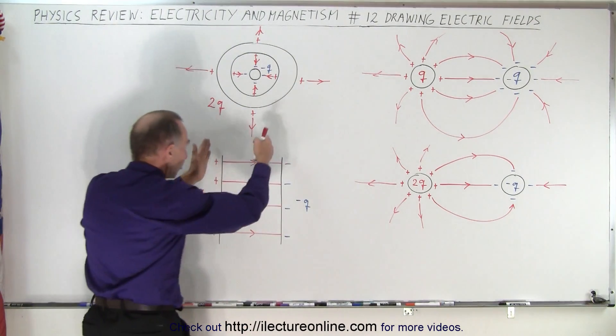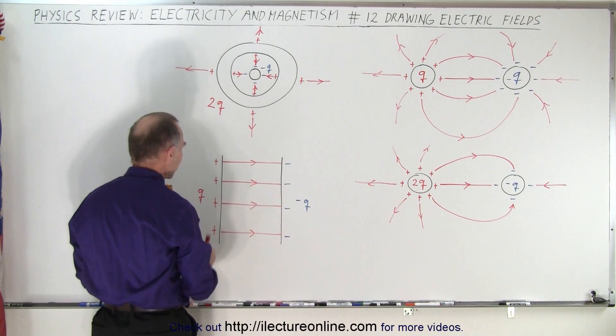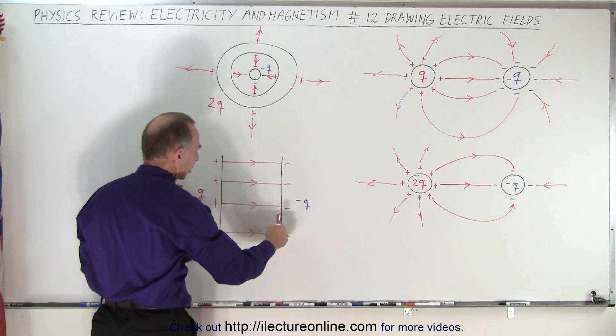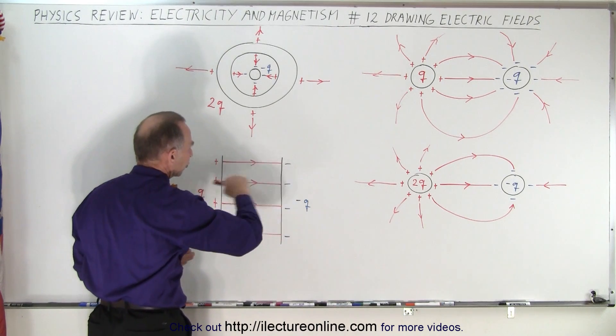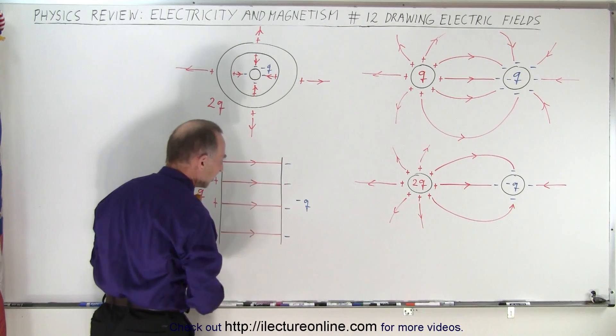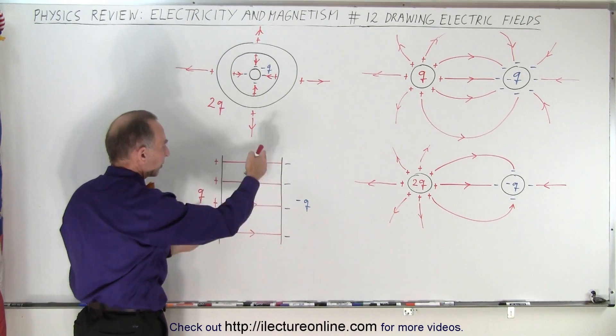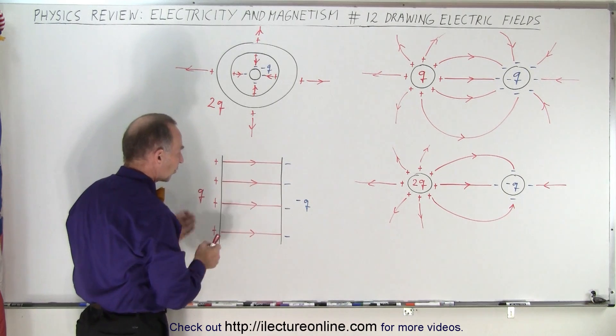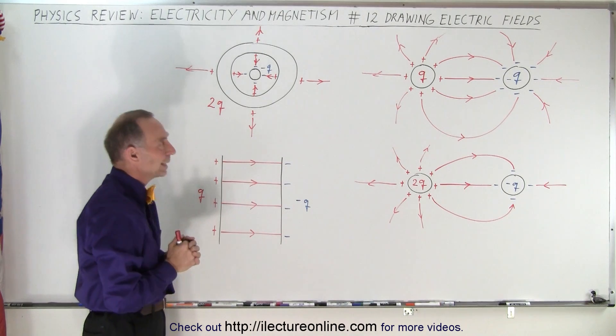And if we have two plates, metal plates facing each other, and we put positive charge on one and negative charge on the other, the electric field lines will go straight across from positive to negative. Typically on a situation like this, you have an equal number of charges on both sides, one being positive and one being negative.